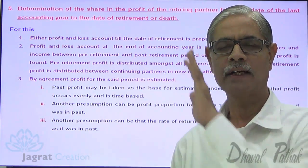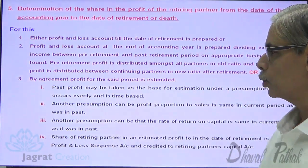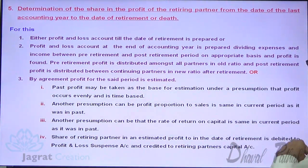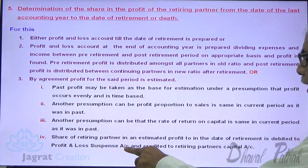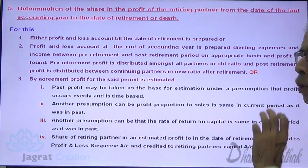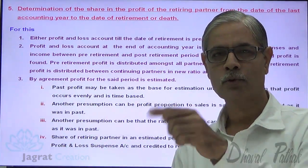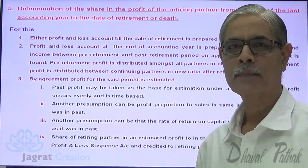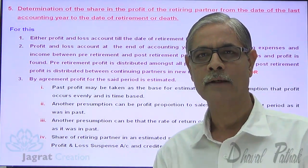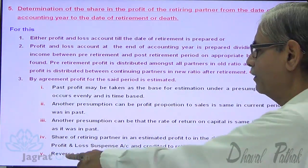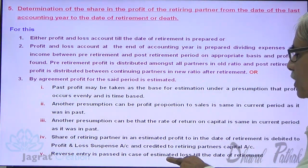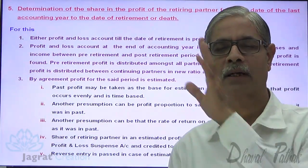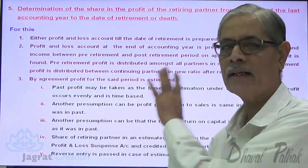In the estimated profit, find out the share of the retiring partner and write down the journal entry for it. The share of the retiring partner in estimated profit up to the date of retirement is debited to Profit and Loss Suspense Account and credited to the retiring partner's capital account. If there is an estimated loss till the date of retirement, the entry is reversed: Retiring Partner's Capital Account is debited and Profit and Loss Suspense Account is credited.